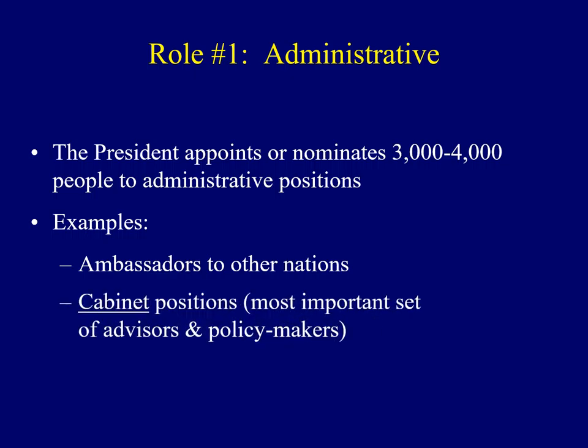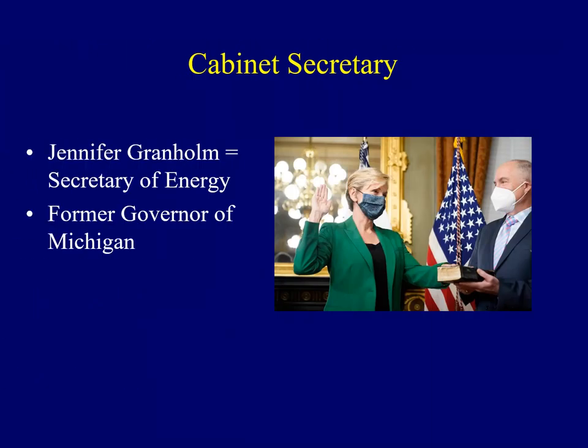There are many other examples of people who work in the presidential administration. Maybe the most important group would be the cabinet-level officers — the most important set of advisors and policy makers for the president, helping the president enforce all laws. The image here shows Jennifer Granholm, the current Secretary of Energy for President Biden. Several years back she was the two-term governor of the state of Michigan, and she's now in Joe Biden's cabinet.